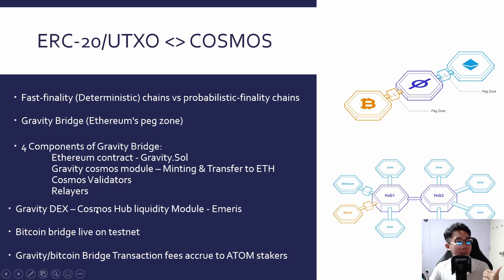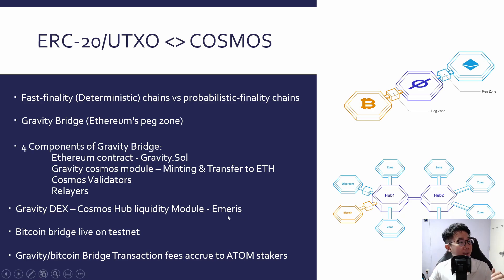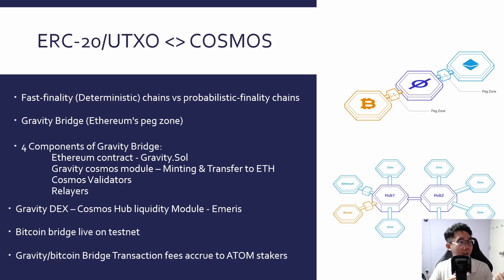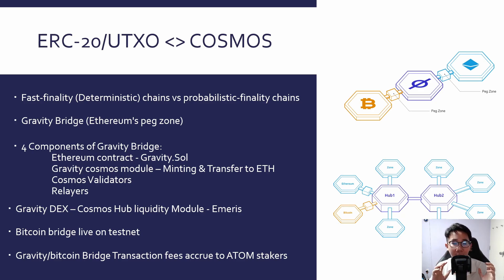There is also the Gravity DEX — a DEX built on the Cosmos Hub itself. Emeris is the front-end application that uses the Gravity DEX, and this DEX will allow the transfer and swap of tokens between Ethereum and Cosmos. A Bitcoin bridge is also something they are working on and is already being tested on testnet. All Gravity and Bitcoin bridge transaction fees also accrue back to ATOM stakers — another added value accrual for ATOM token holders.